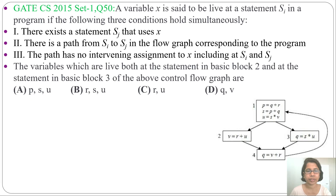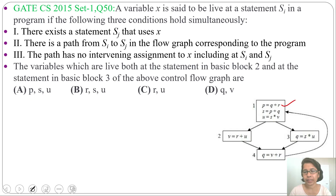Let me check option-wise. First I will check option A. In option A, variables given are P, S, U. I will check the liveness of P, S, and U. First I will check P — where P is defined. P is defined at block 1 first statement, and where P is used — P is used in block 1 second statement. After that there is no use of P.